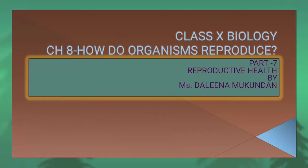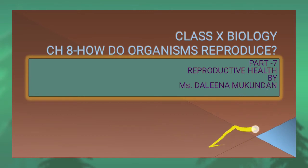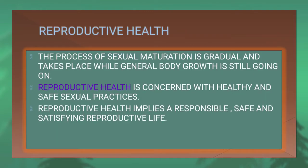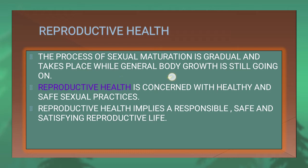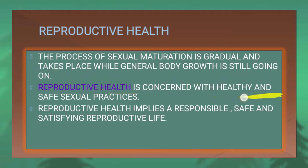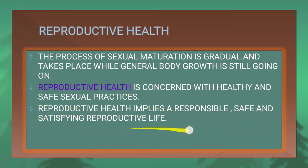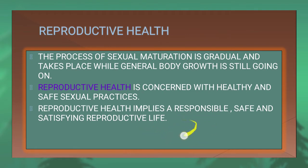Welcome back students to chapter 8: How do organisms reproduce? Part 7 — Reproductive health. The process of sexual maturation is gradual and takes place while general body growth is still going on. Reproductive health is concerned with healthy and safe sexual practices. Reproductive health implies a responsible, safe and satisfying reproductive life.